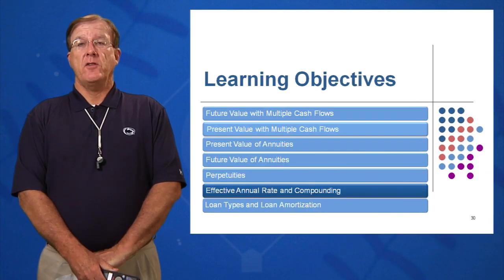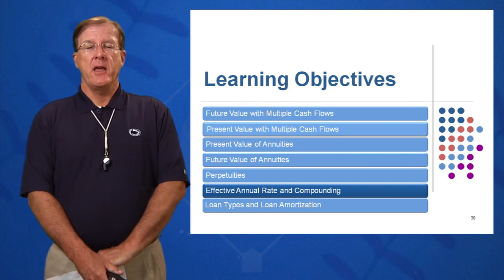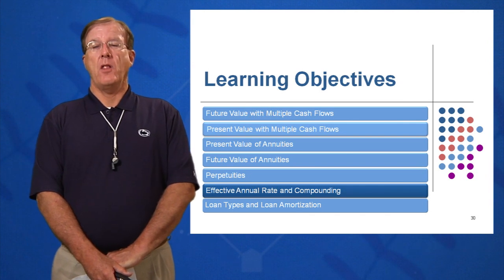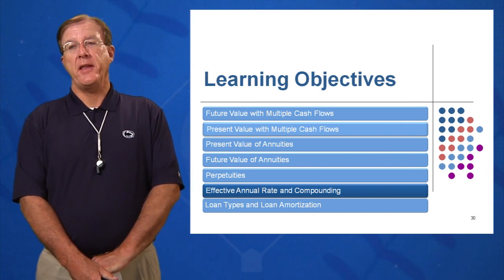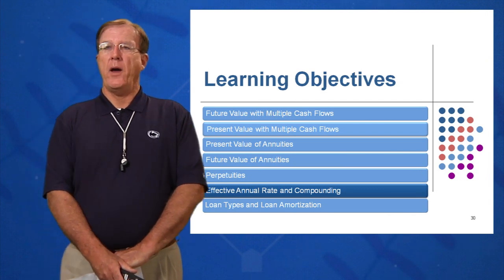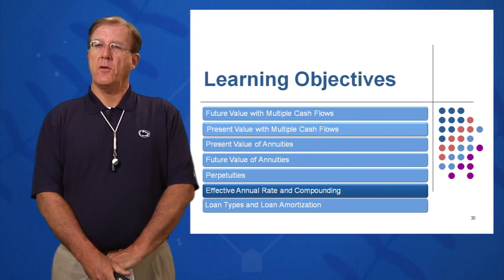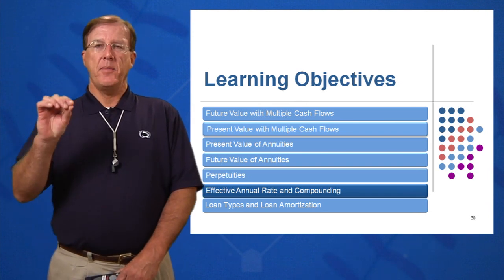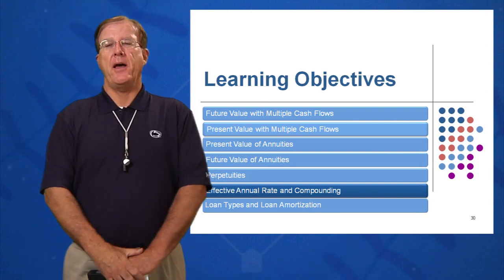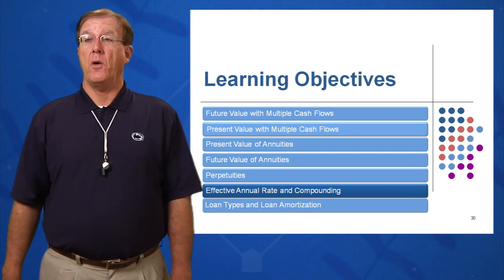Learning objective number six in session six deals with EAR and compounding. You'll be confronted with this when looking at loans or credit cards you may take on, where the bank will give you a stated or quoted rate. Having taken this course, you'll know that's not what you're paying. If it says the magical words compounded daily, monthly, quarterly—anything but compounded annually—you know you're paying a higher effective annual rate than the stated or quoted rate.